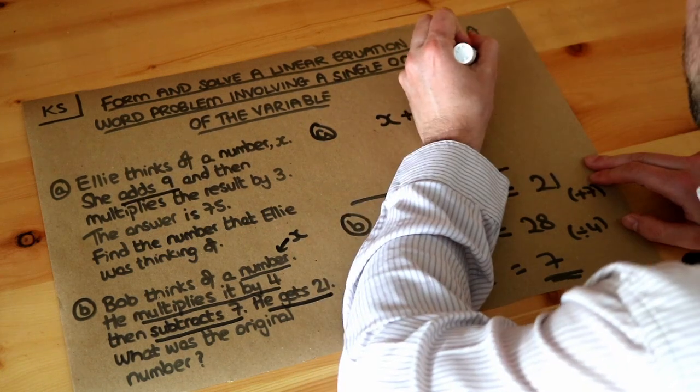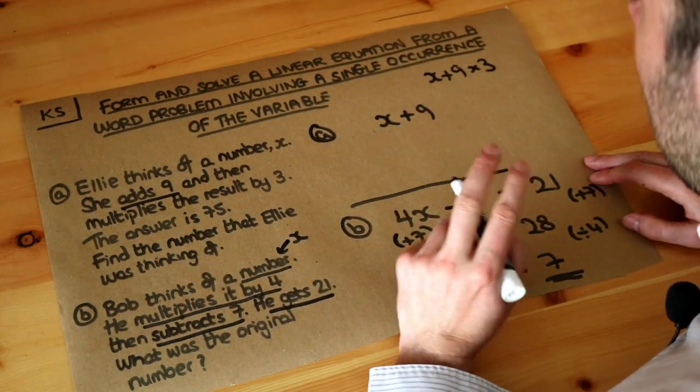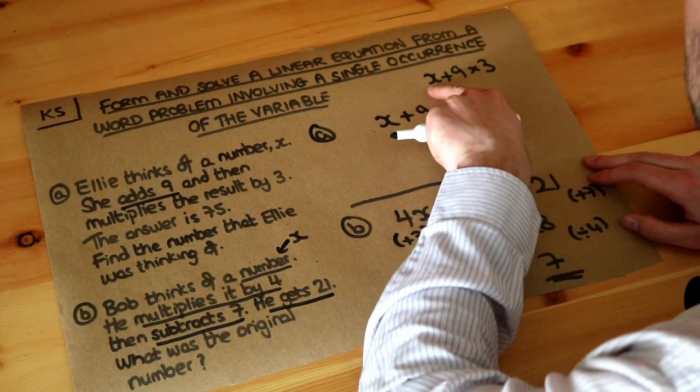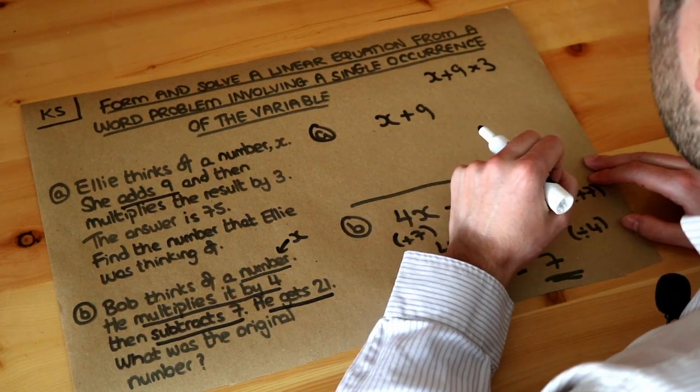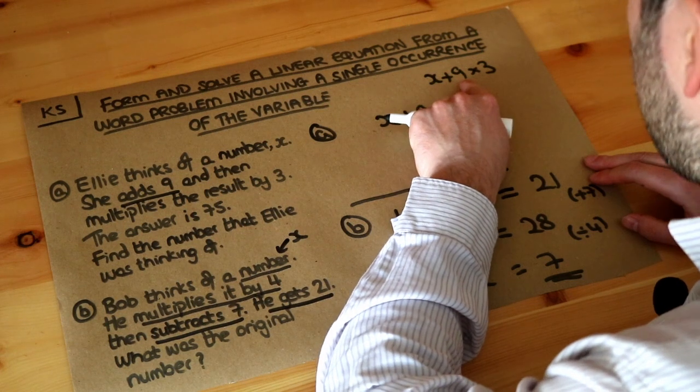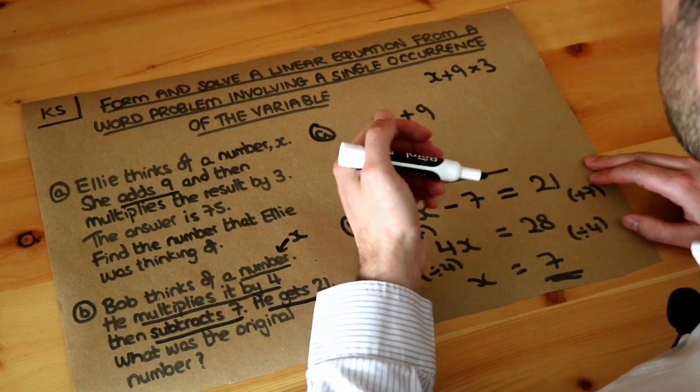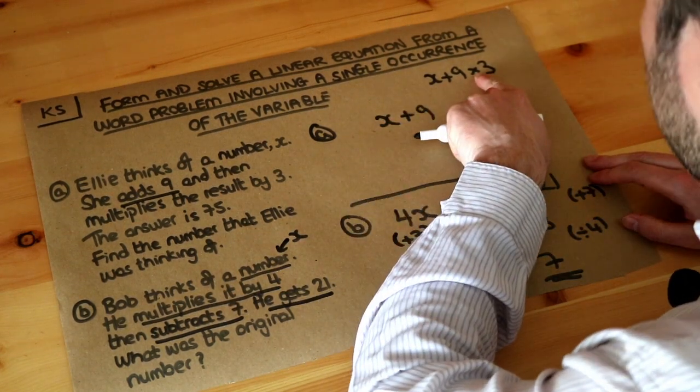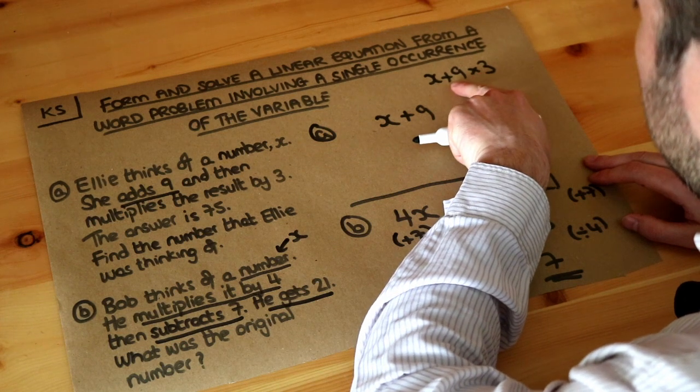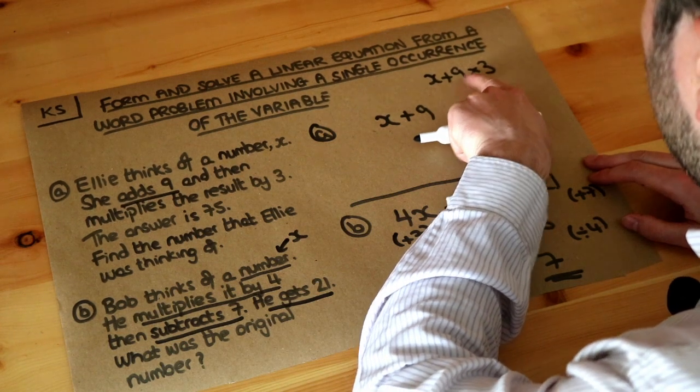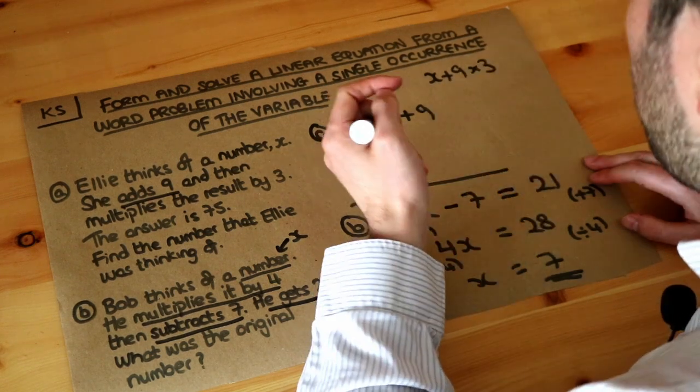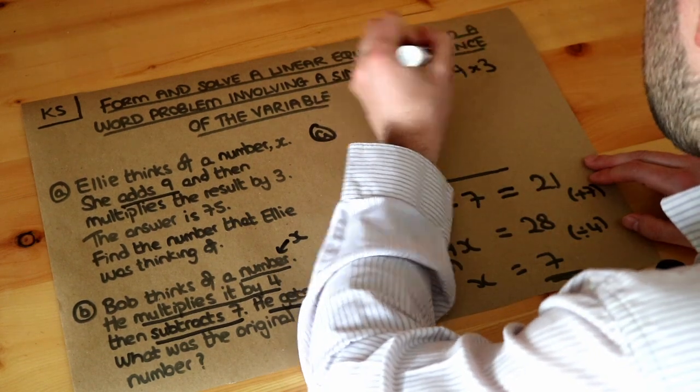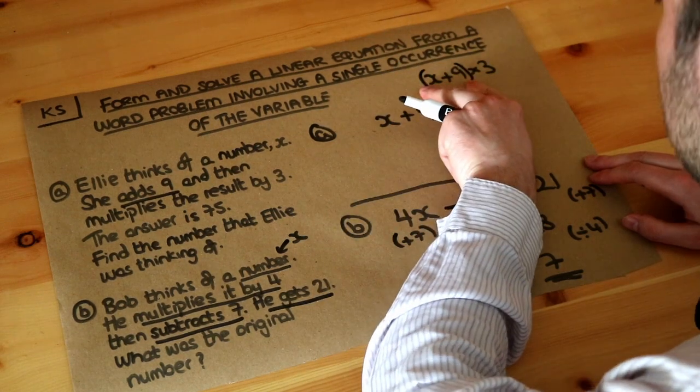3. You might think you can write x + 9 × 3, but you have to be careful about order of operations. This doesn't mean what you might think. You might think this is x + 9, all times 3, but because of order of operations, multiplication always comes before addition. So this would actually be 9 × 3, then x plus that, which is not what you want.